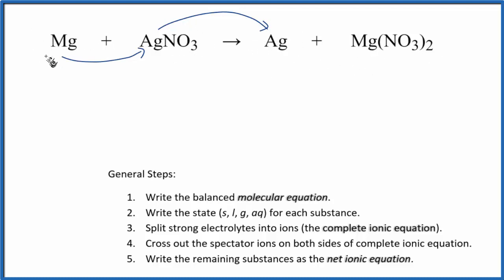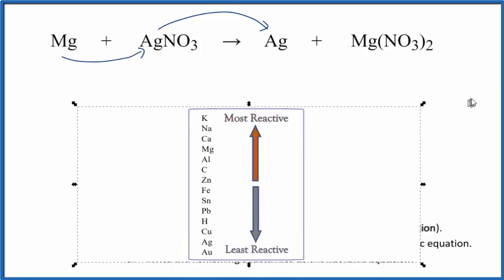But is magnesium reactive enough to do that? We can look on this activity series of metals here, and we can see. So here's our list. Here's magnesium more towards the top, very reactive, and then silver's down at the bottom. So the magnesium, that's reactive enough to push the silver out. So this reaction will happen.